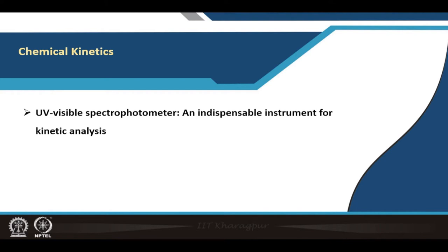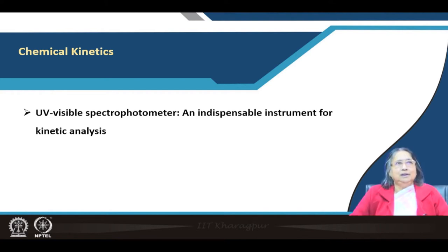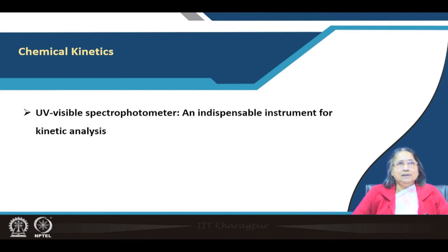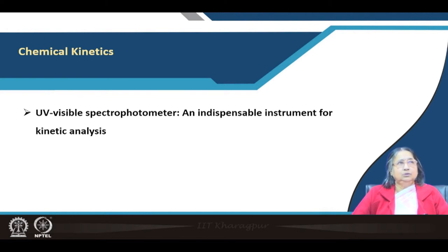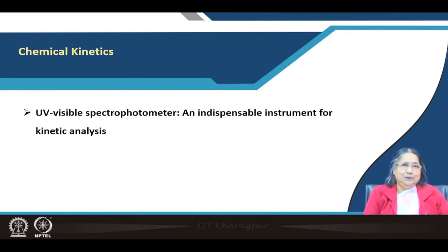The UV-visible spectrophotometer is a very common and inexpensive instrument which is present in every lab — research labs, MSc or MTech labs. It is a very useful instrument, and as I mentioned in an earlier lecture, absorbance values can be used to monitor the progress of a reaction. Here I will explain those things in a simple way so that you understand.